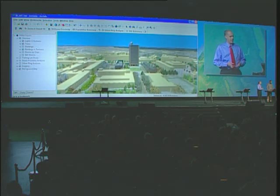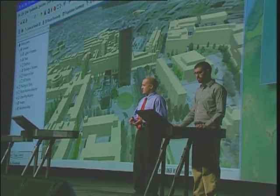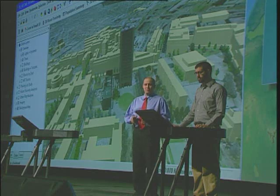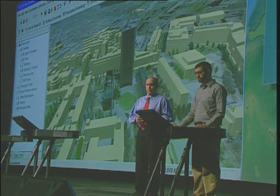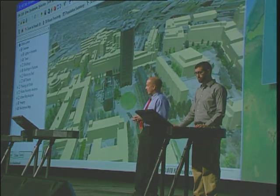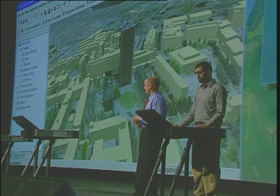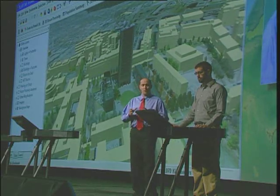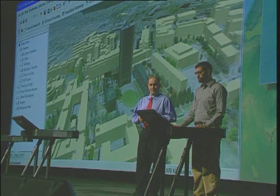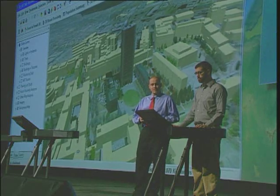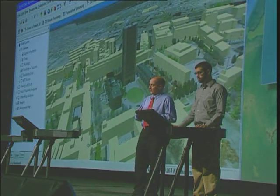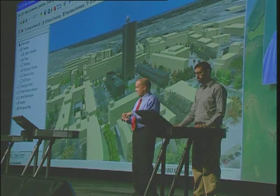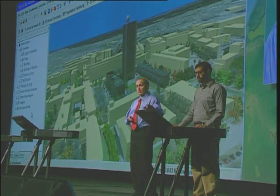At MIT, we are located in an urban environment. We have 12 million square feet of floor space, and we're situated on a 159-acre campus in the city of Cambridge. If you do the math, you'll find that we actually have more floor area than we do land area, and this means that space is at a premium, and we spend a lot of our time and resources managing resources inside the buildings and across the campus.